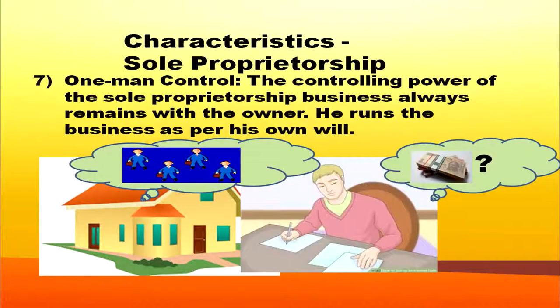Another characteristic is one man control. The controlling power of the sole proprietorship business always remains with the owner. He runs the business as per his own will — he makes arrangement for the building, manages the workers, makes arrangement for money. Everything is controlled by the owner, that is the sole proprietor.